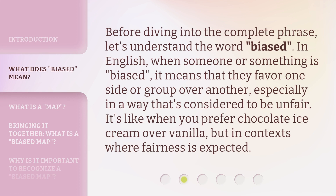Before diving into the complete phrase, let's understand the word biased. In English, when someone or something is biased, it means that they favor one side or group over another, especially in a way that's considered to be unfair. It's like when you prefer chocolate ice cream over vanilla, but in contexts where fairness is expected.